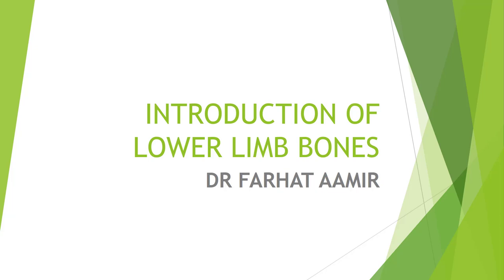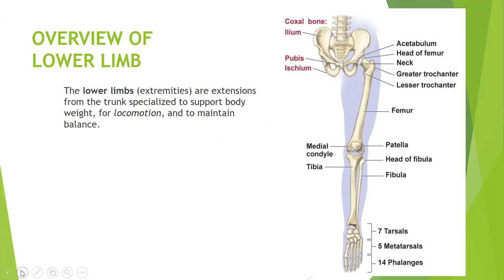Today we will start a new region which is the lower limb. The lower limbs are extensions from the trunk, specialized to support the body weight, for locomotion, and to maintain balance. The lower limb is the inferior appendicular skeleton, just like the upper limb which is the superior appendicular skeleton — both are united with the axial skeleton. There are two lower limbs, one on each side, connected to the trunk.